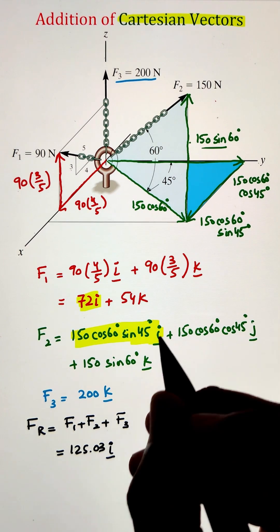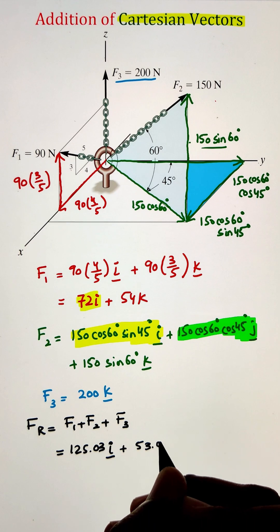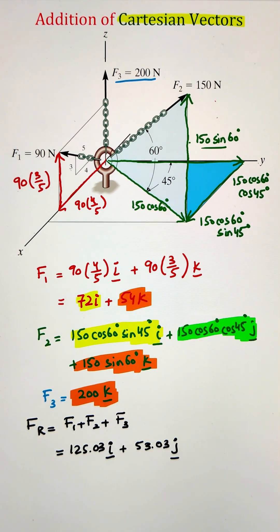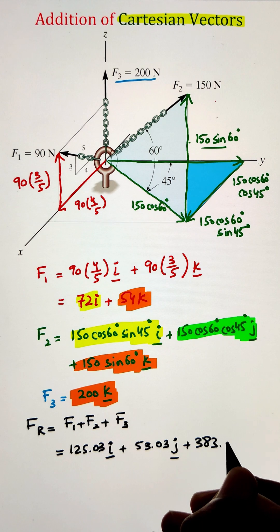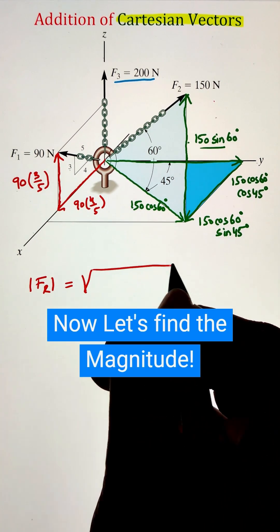Once we have all of these individual forces, let's go ahead and add all the I components together. It is giving us as 125.03. Next, we add the J components and finally, all the K components give us our final resultant force.